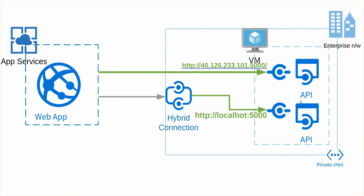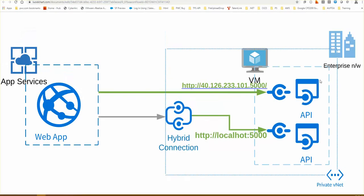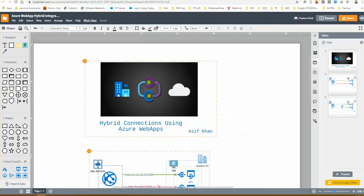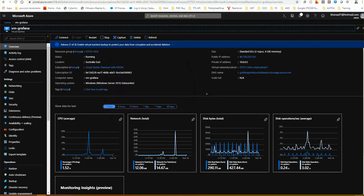Fundamentally, hybrid connection is a sort of service you install on the VM. When a request comes in as localhost, the VM serves that localhost request and looks for the resource locally on the VM itself. Let's now jump to the demo.